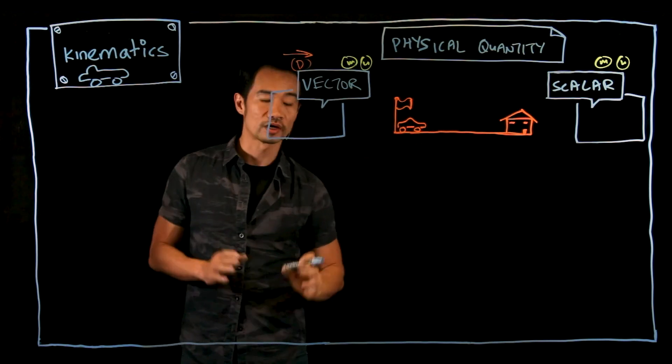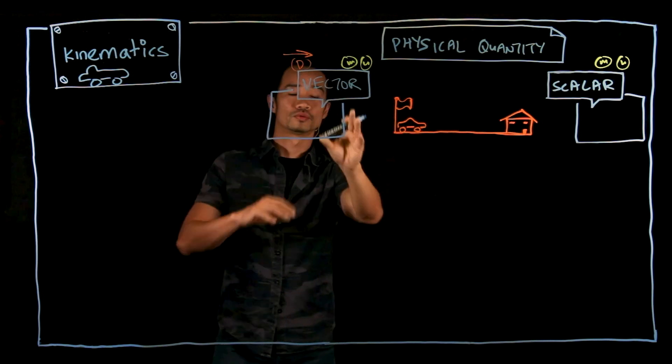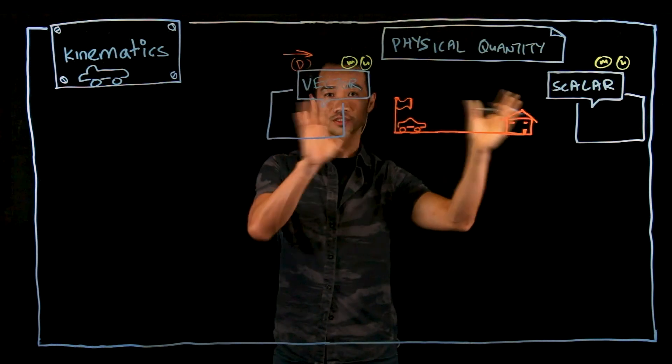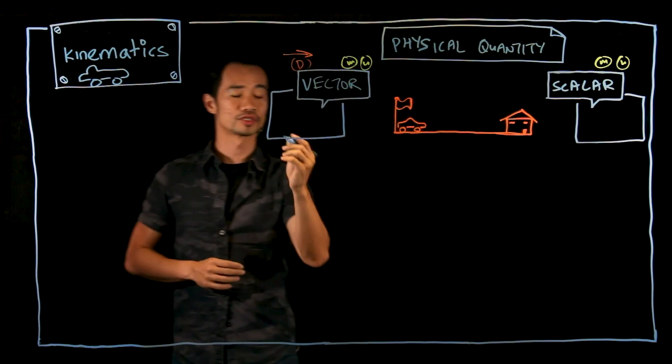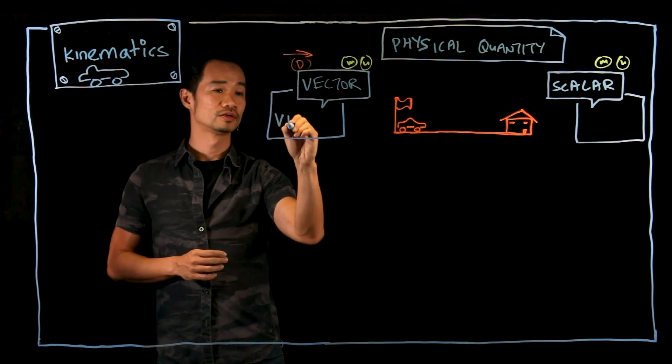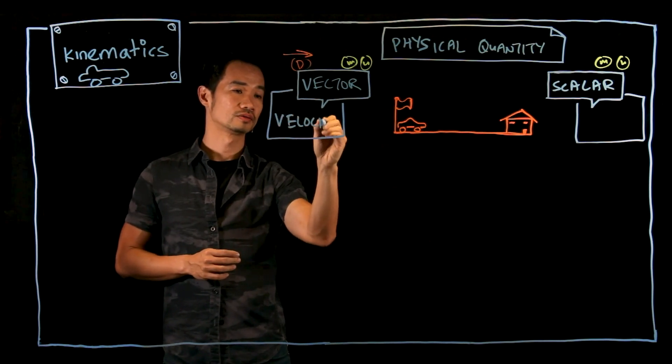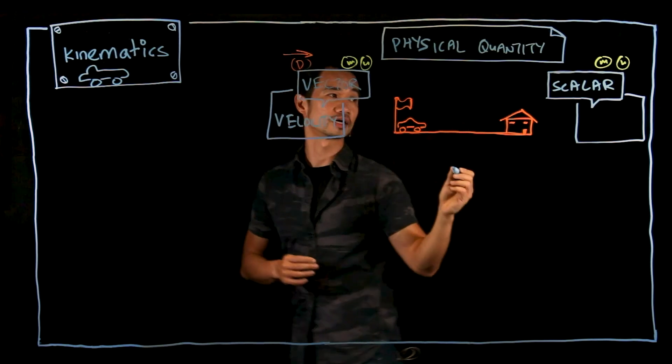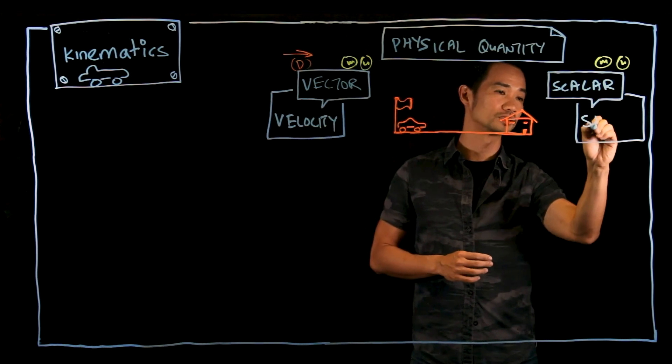So today we are going to cover one more vector quantity and one more scalar quantity that is related to each other. First over here is velocity and over at the other side we have our friend Mr. Speed.